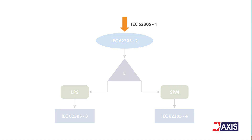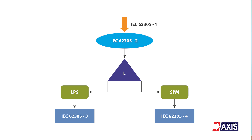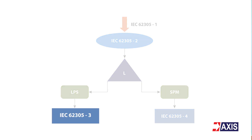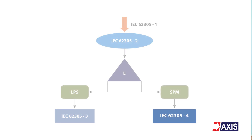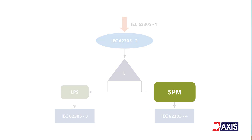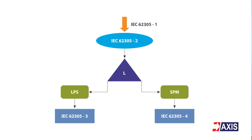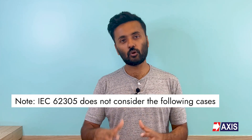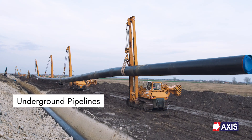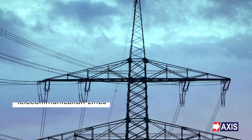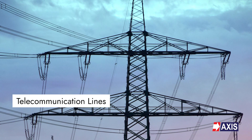Part one is a general introduction to the threat of lightning. Part two delves into the calculation of lightning risk. Part three describes the design of the lightning protection system or LPS, and part four describes the design of the surge protection measures or SPM. Please note that this standard does not consider railway systems, ships, aircraft or offshore installations, underground high pressure pipelines, and power and telecommunication lines placed outside of a structure.